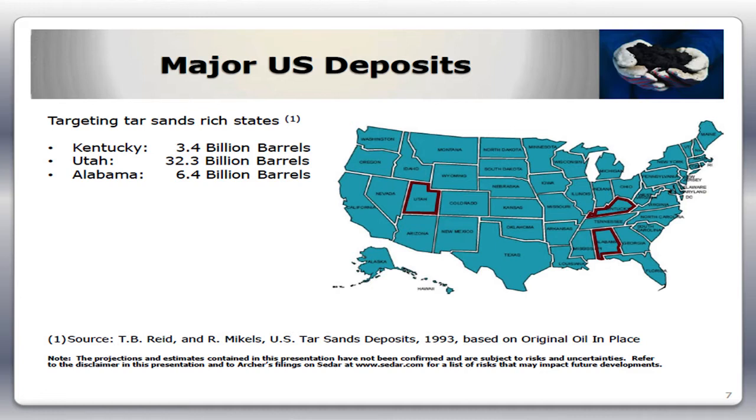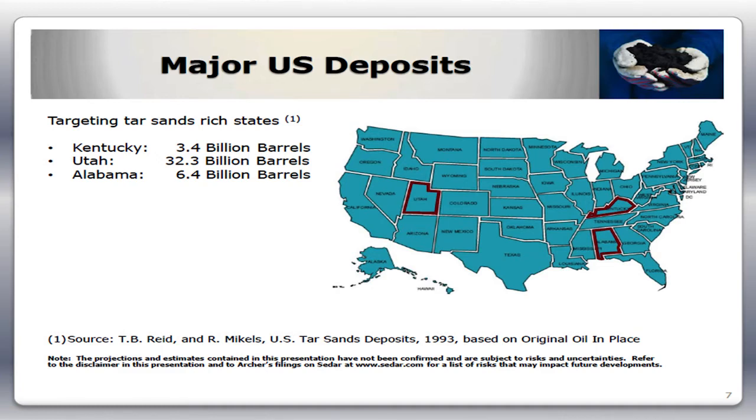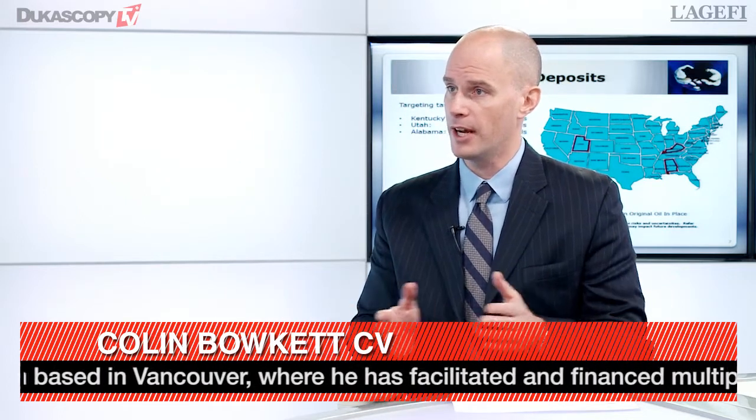Our initial projects are in Kentucky. The primary reason we're focusing there is because the permitting process is very clean — permitting a new site in Kentucky takes approximately six months. Another very important consideration is that we're very close to the US Gulf refineries, which is a key difference versus an operation in Canada, where you have an enormous infrastructure challenge of moving your product to market. We're nine miles from railhead at our initial project and then a straight shot to the US Gulf, which allows very easy access to transportation and refinery access.